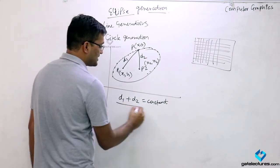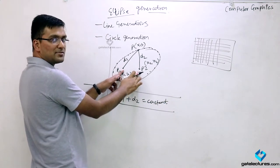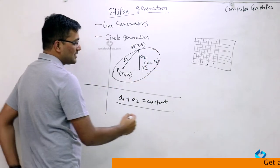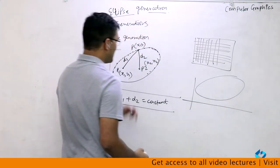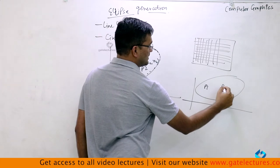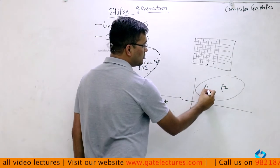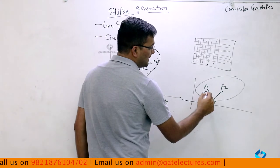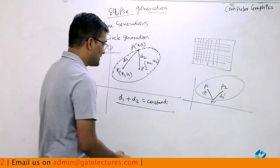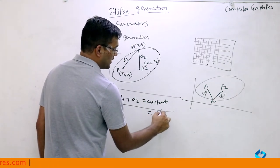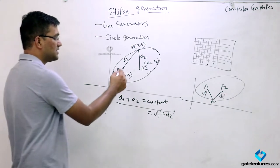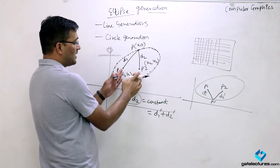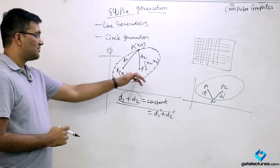This is a key property: I can keep P1 and P2 as fixed points and rotate my point P anywhere on the boundary. Even if I move P to a new position P', with distances D1' and D2', the constant is still equal to D1' plus D2'. The summation of these distances D1 and D2 does not change no matter where I move point P, provided P1 and P2 remain fixed within the ellipse.